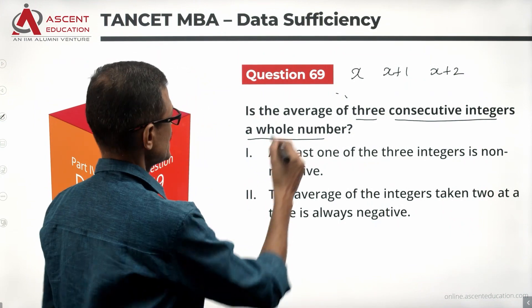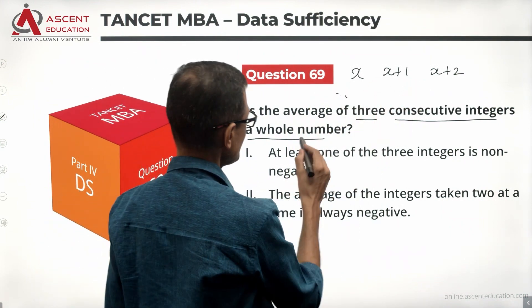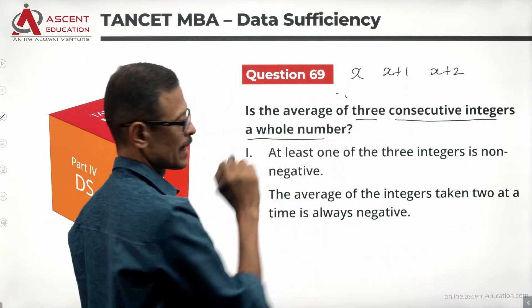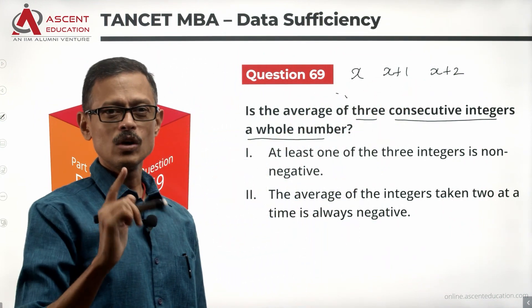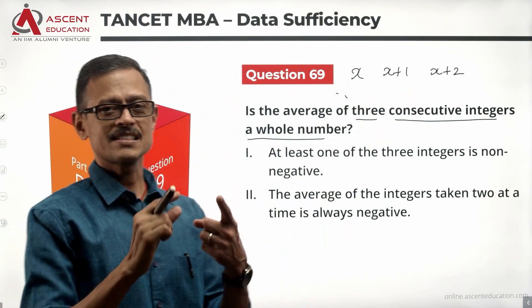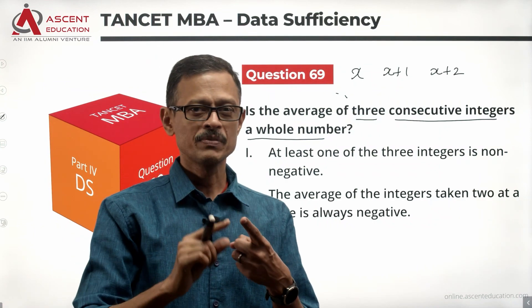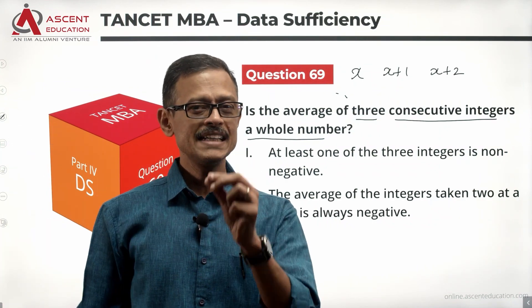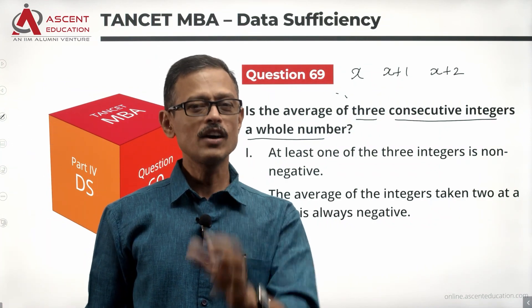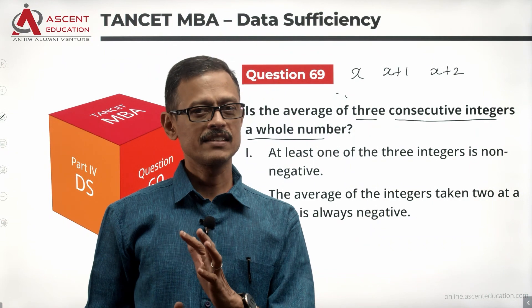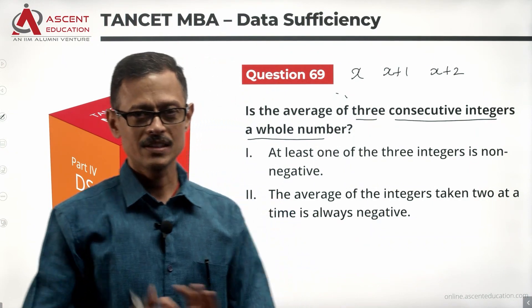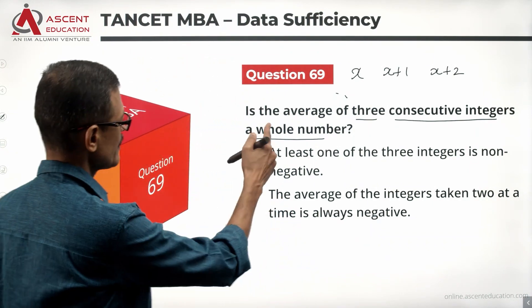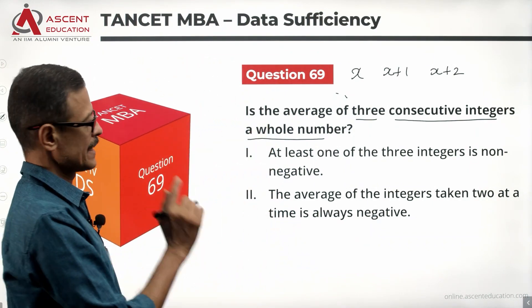Whole numbers start from 0: 0, 1, 2, 3, 4 — these are whole numbers. Integers which are non-negative are essentially whole numbers. So the question is asking whether the average is a whole number.